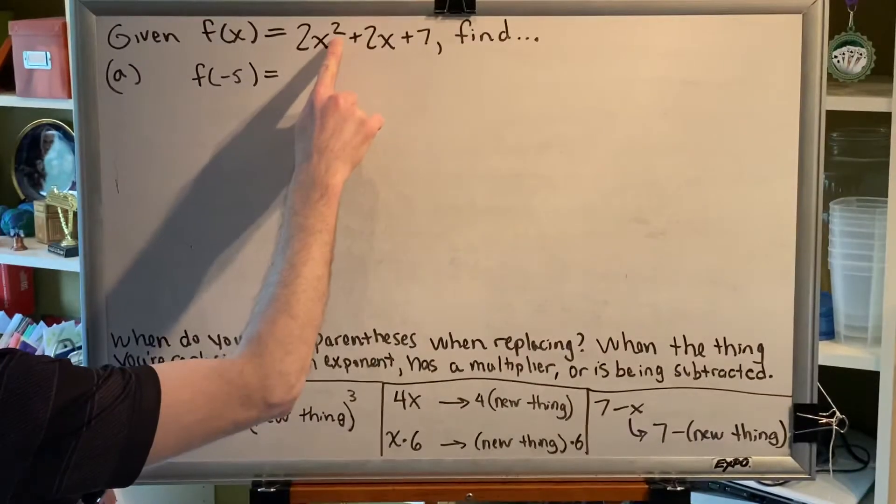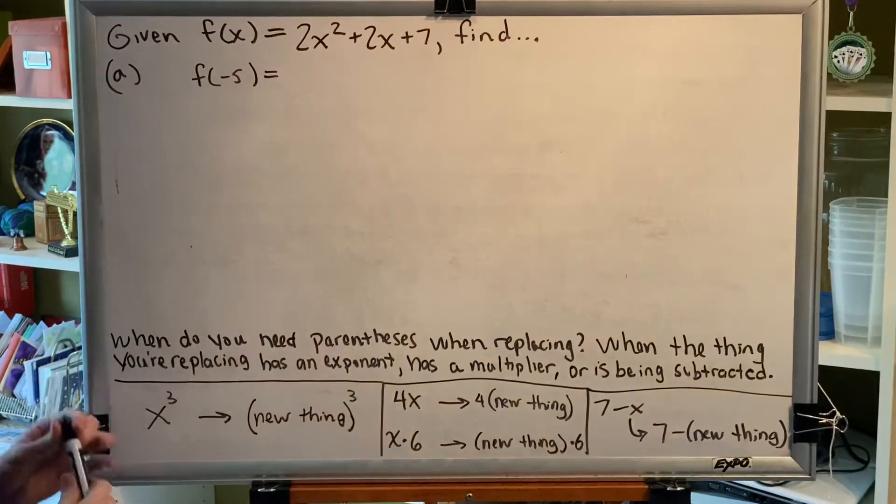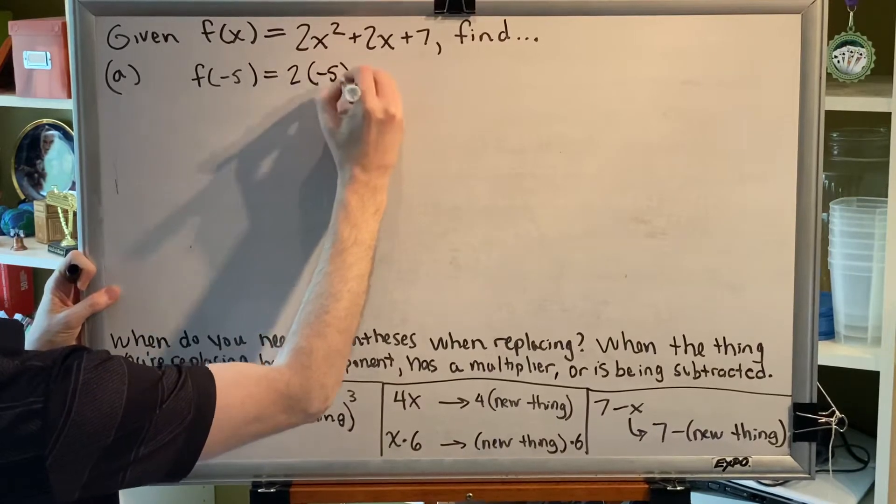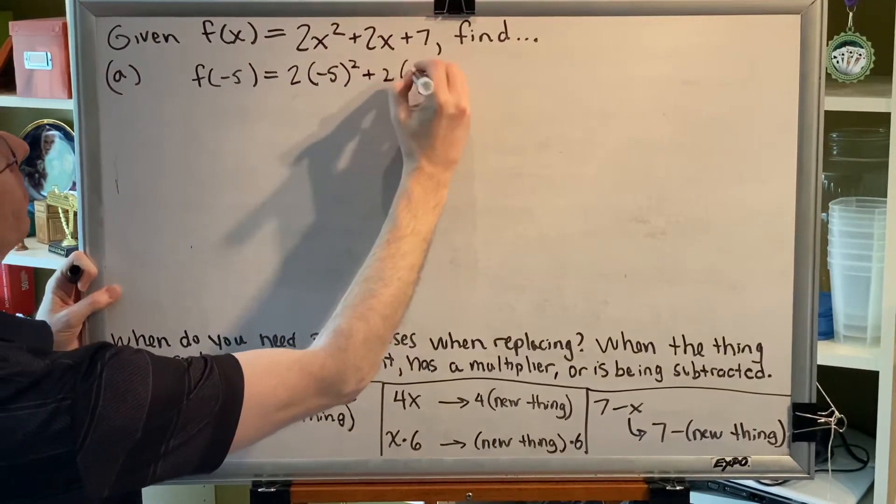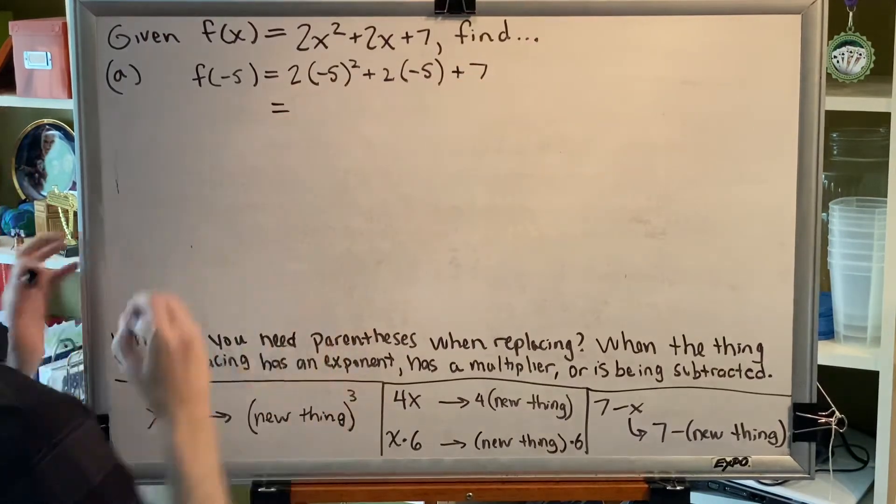This x has an exponent, parentheses will be needed. This x has a multiplier, parentheses will be needed. So we'll get 2(-5)² + 2(-5) + 7.